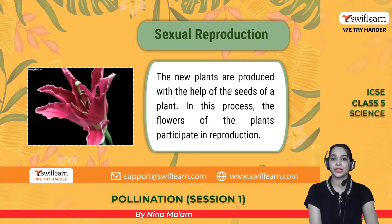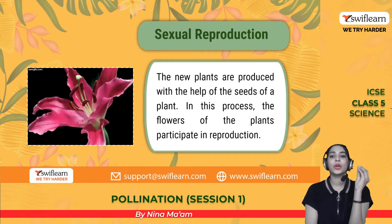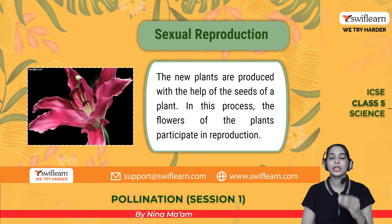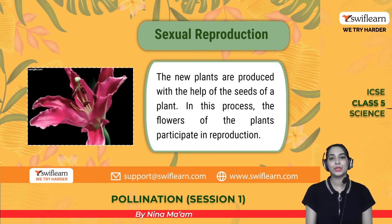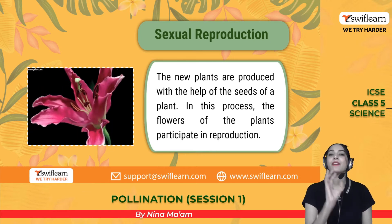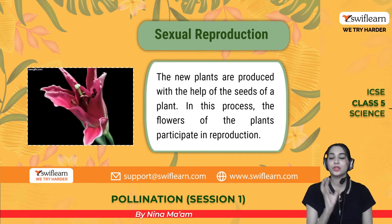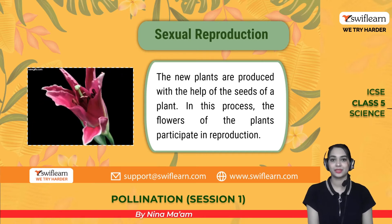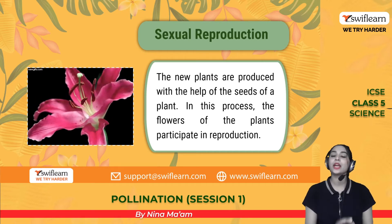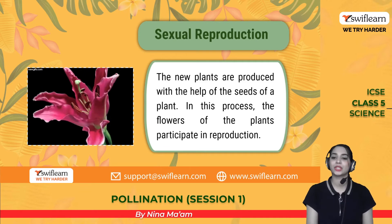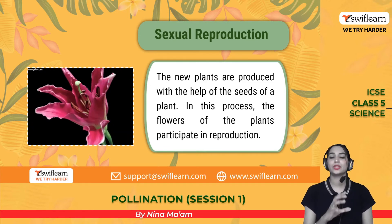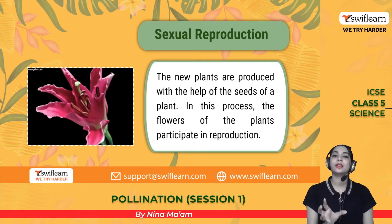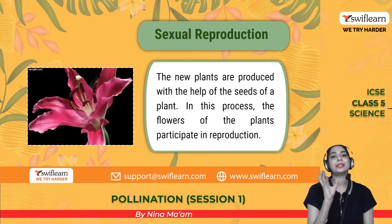In sexual reproduction, new plants are produced with the help of seeds. Seeds play a vital role in this type of reproduction, which is why it is known as sexual reproduction. Examples include orchids and many other kinds of flowers that undergo sexual reproduction.